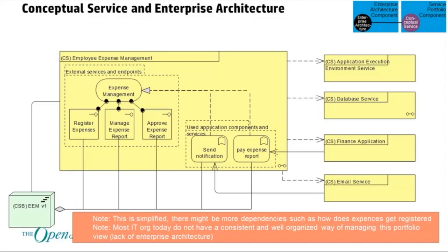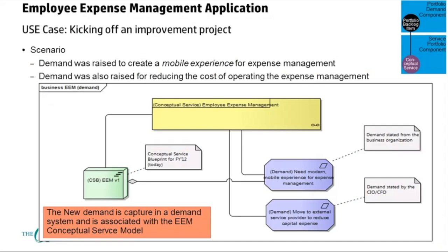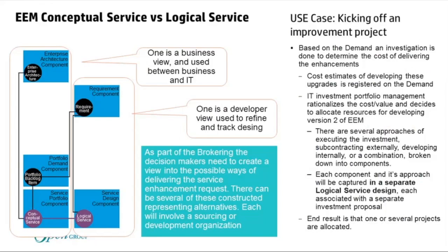This is a simplified view; in practice there would be more dependencies and details, but it's good enough for now. Demand is then raised: people want a mobile experience, and also we want to reduce the cost of operating the employee expense management system. That demand comes partly from the business — the mobile experience — and partly from the CFO or CIO asking how to optimize how we run this.